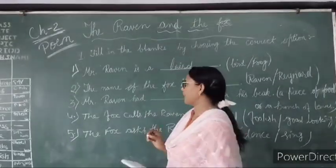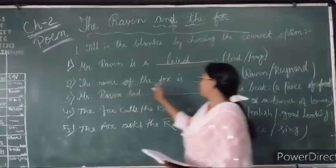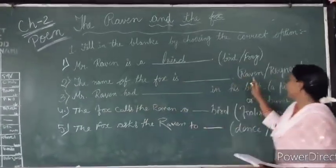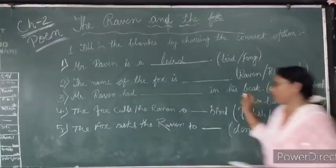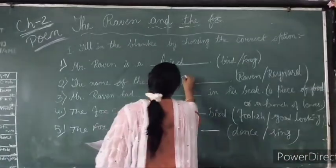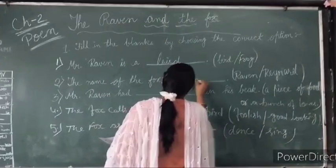Now, the second one is: the name of the fox is Raven or Reynard? Reynard. Very good. So your answer will be Reynard.